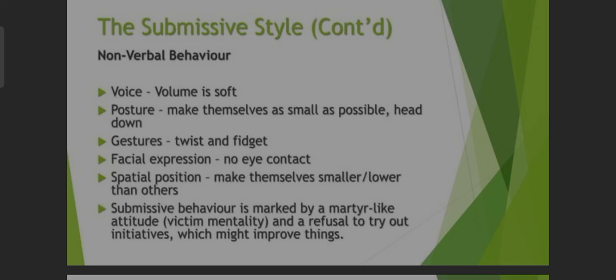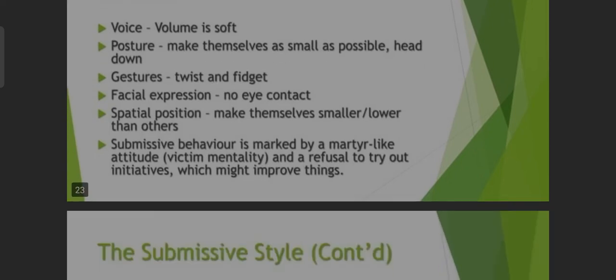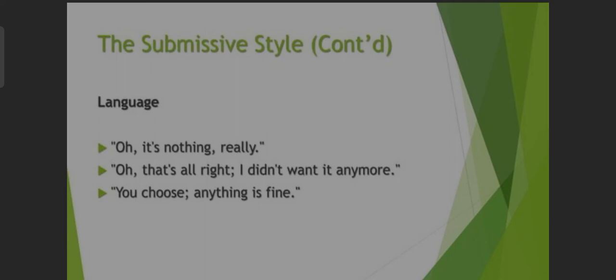Submissive nonverbal behavior continued: facial expression — no eye contact. Submissive behavior is marked by a martyr-like attitude, victim mentality, and a refusal to try any attitude which might improve things. Submissive style language examples: 'Oh, it's nothing really,' 'Oh, that's all right,' 'I didn't want it anymore,' 'You choose anything.'